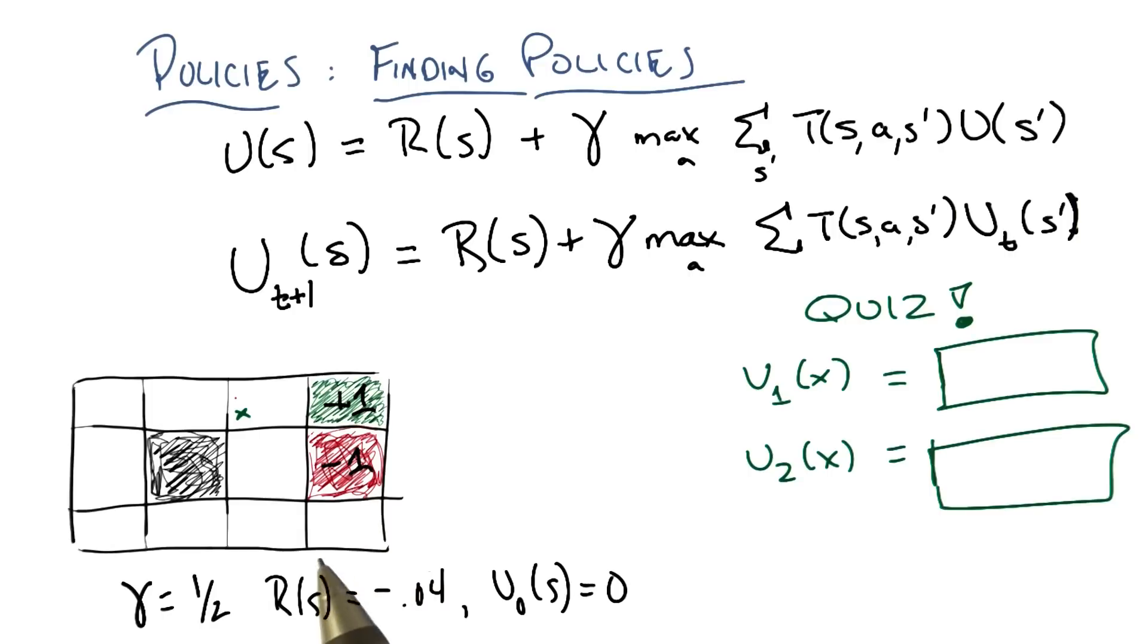Okay. All right, and there's a little more information you need. Gamma in this case is going to be equal to one half, mainly because it's easy to do the math if you do it that way.